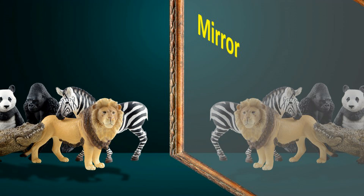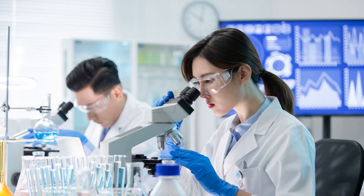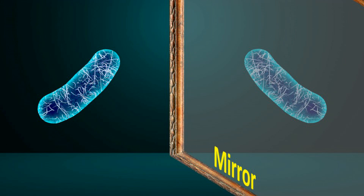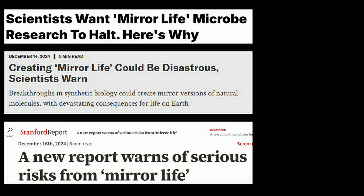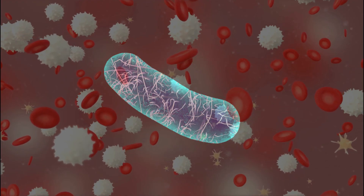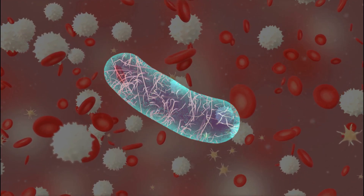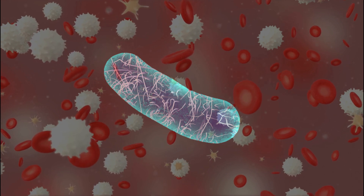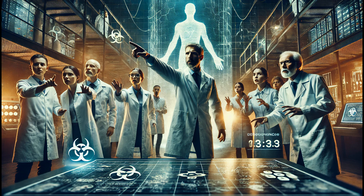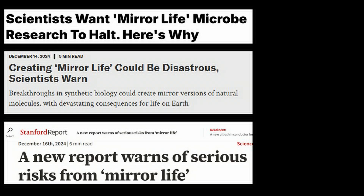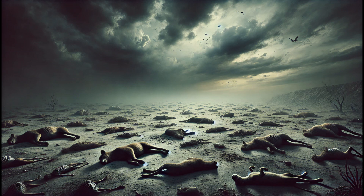Today, some scientists are attempting to create mirror image life forms in the laboratory. They believe it may soon be possible to create mirror bacteria, which are mirror versions of normal bacteria. But this has triggered serious concerns among other scientists, because our body's immune system and the medicines we rely on today may be completely ineffective against such mirror bacteria. Some scientists have even warned that creating these mirror organisms could lead to catastrophic consequences, potentially threatening the existence of all life on earth.